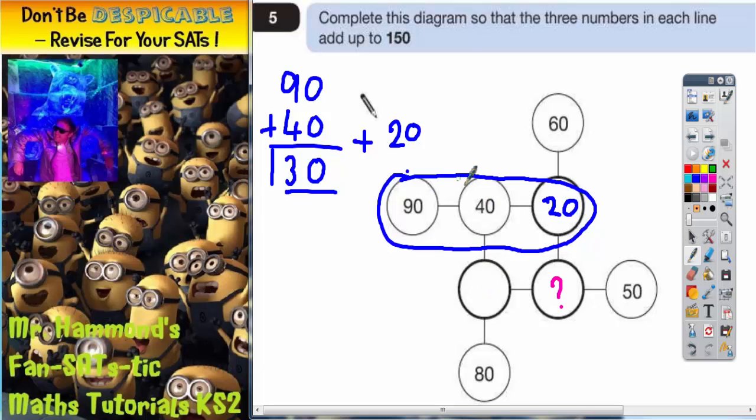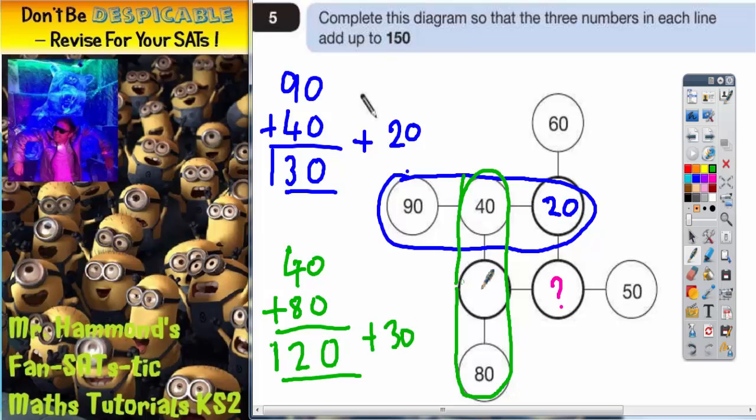To get this one here, we've got the two numbers we know are 40 and 80. If we add those together, zero add zero is zero, four add eight is twelve. So these two together make 120. And to get from 120 up to 150, we would need an extra 30. So this number here must be the extra 30.